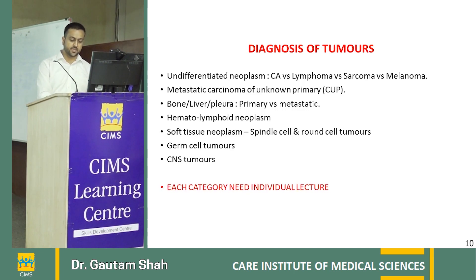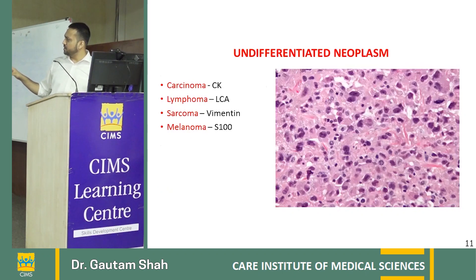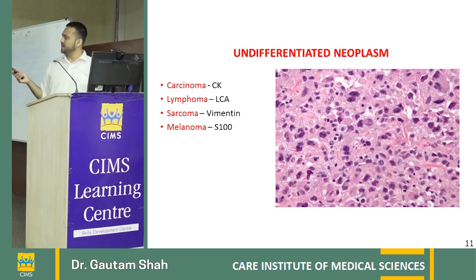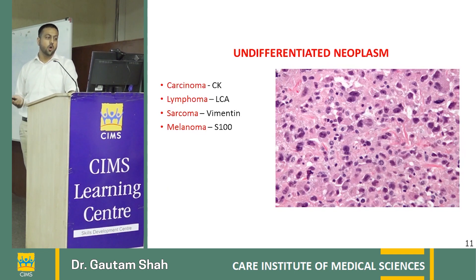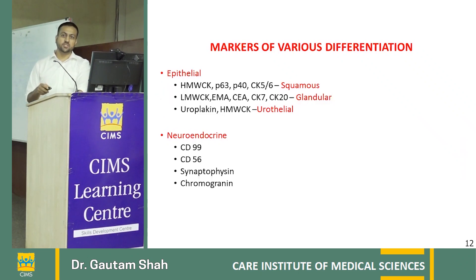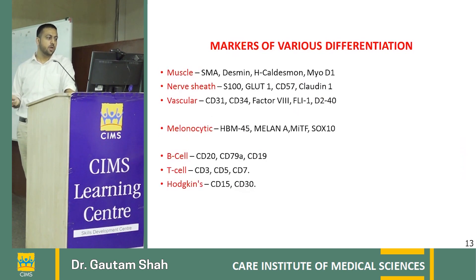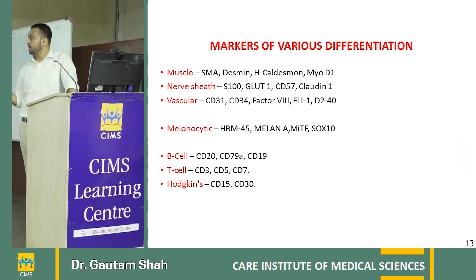For an undifferentiated neoplasm with no glandular differentiation, no spindle cell morphology, and no melanin pigmentation, we do IHC to confirm the biological lineage. The first panel typically includes markers for carcinoma, lymphoma, sarcoma, and melanoma — CK, LCA, vimentin, S100, and others. Based on first panel results, a secondary panel is added. If CK is positive, we go for epithelial tumors — squamous, glandular, urothelial. For neuroendocrine morphology, markers include CD56 and synaptophysin. If vimentin is positive, we check for smooth muscle or vascular differentiation.